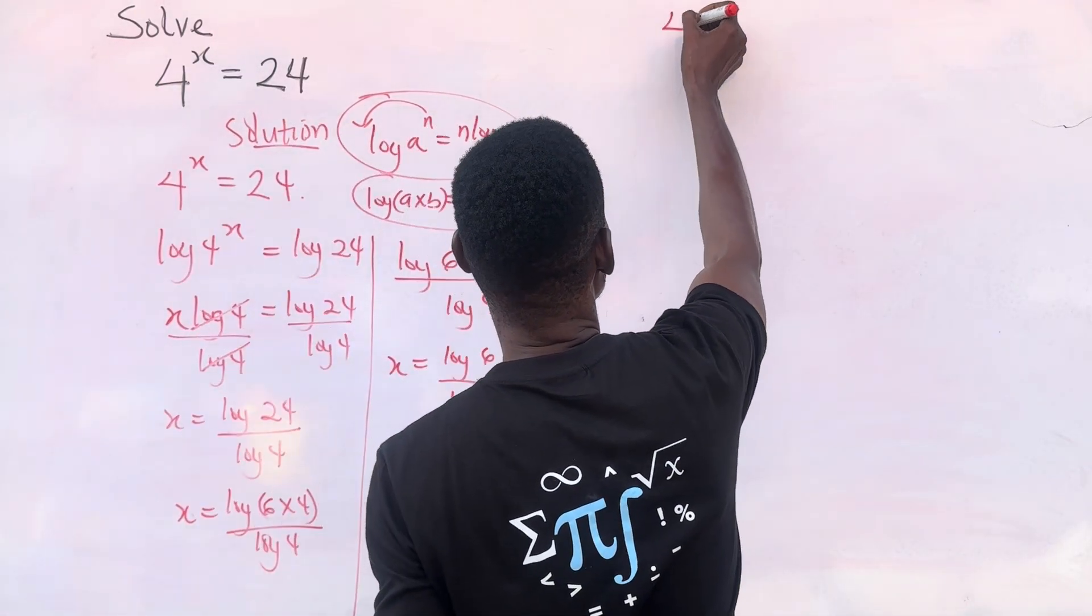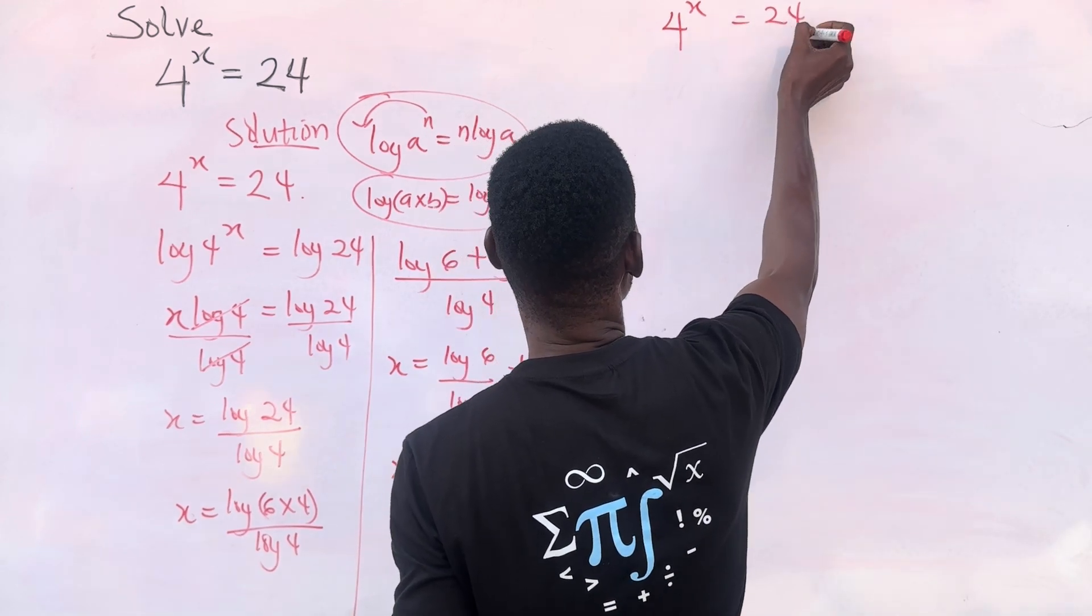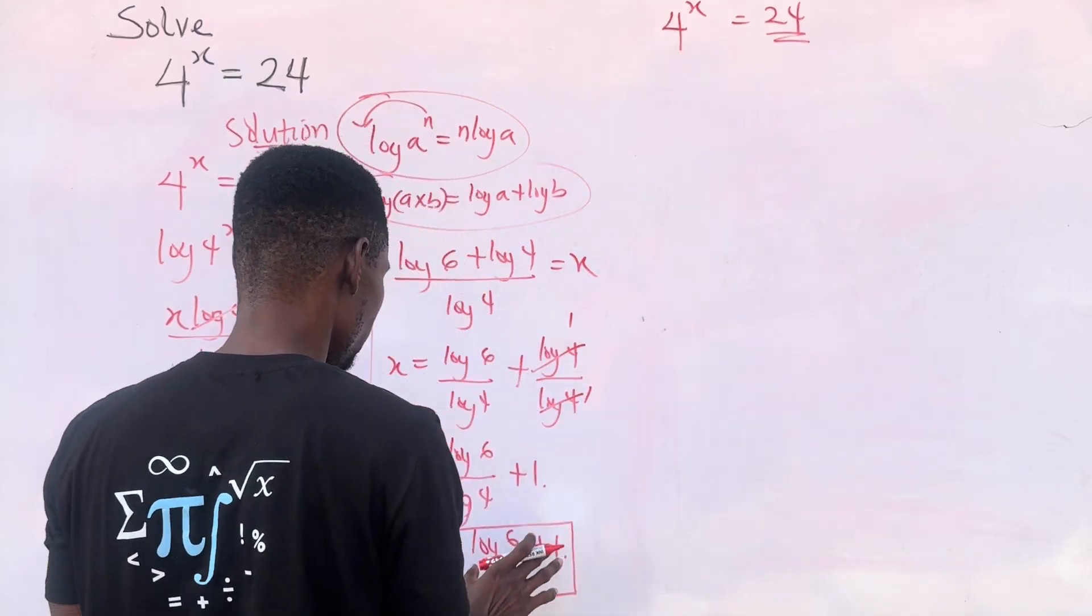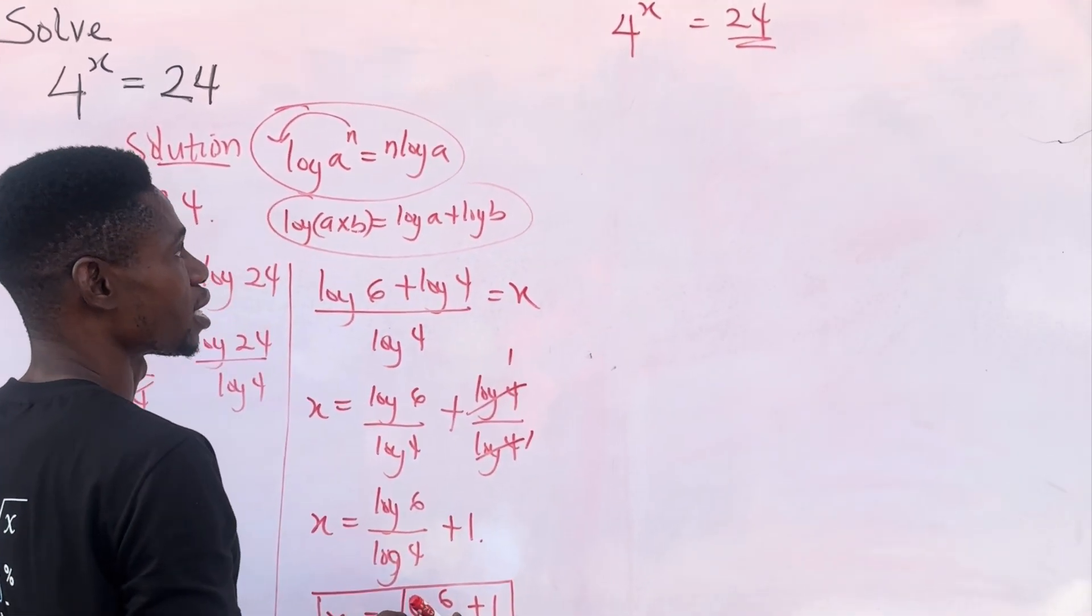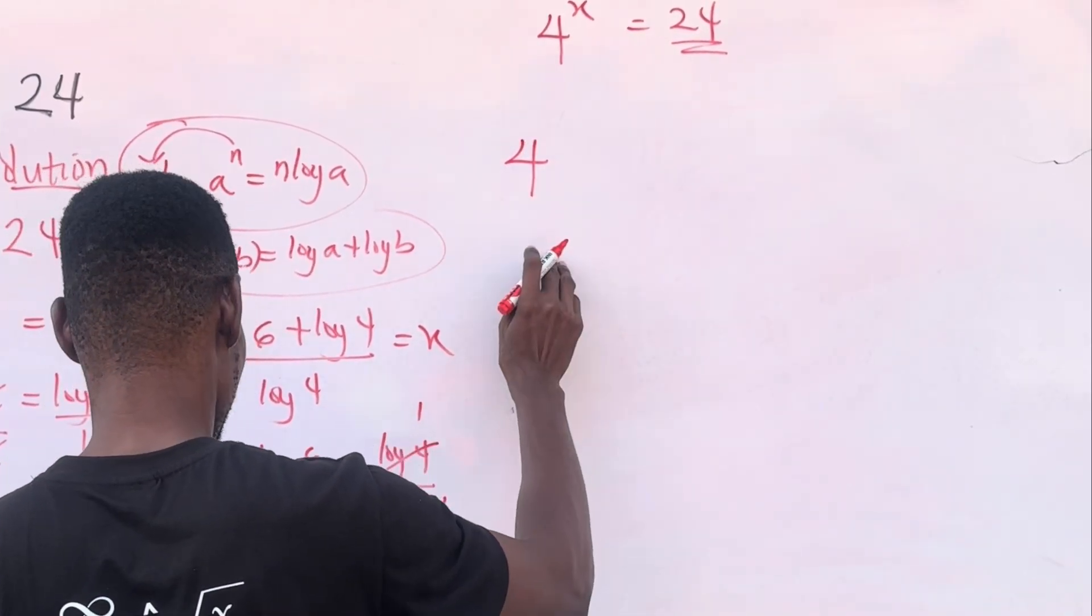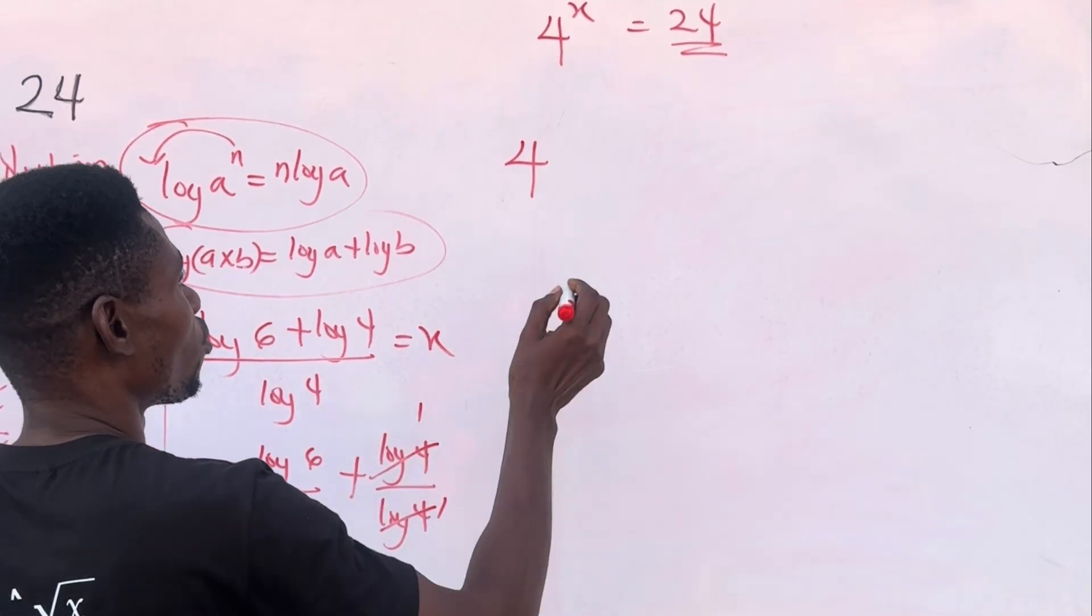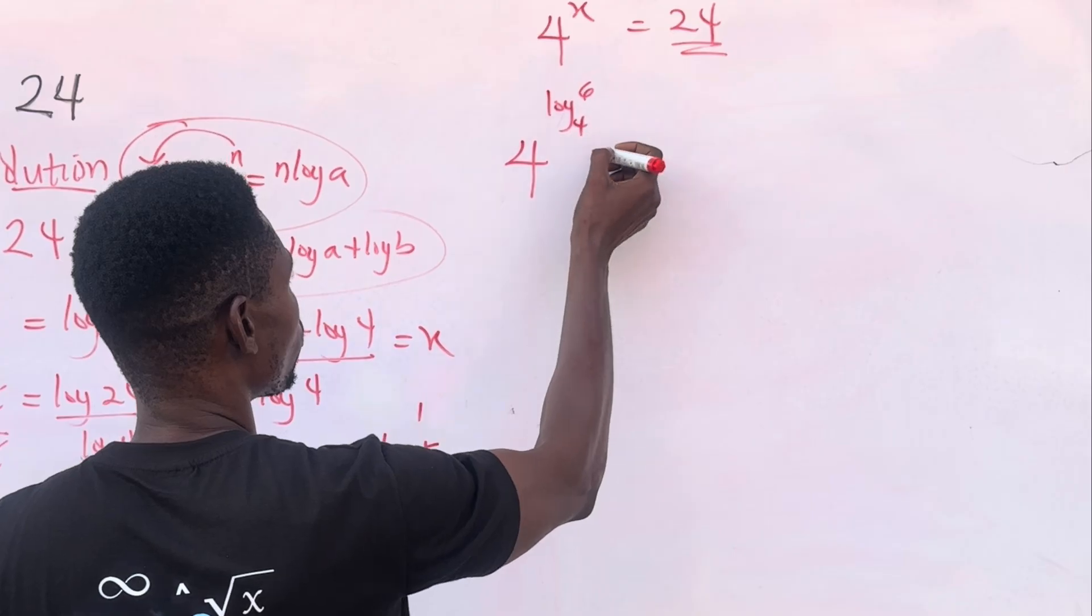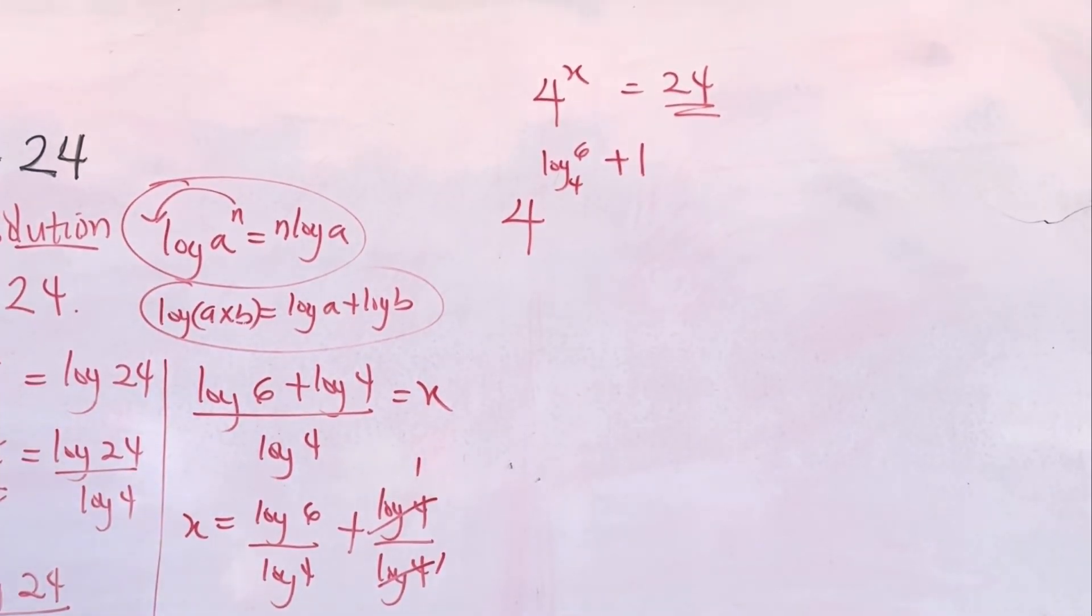So what we have is 4 raised to the power x equal to 24. We are going to pick this left-hand side, replace the x here with this value we got and see if we'll get 24. So what we have is 4 raised to power x. Now, what we have as x is log 6 base 4 plus 1.